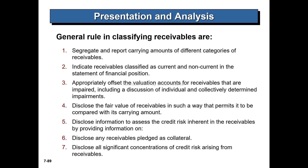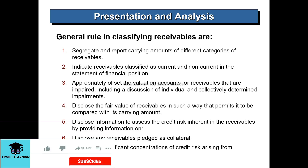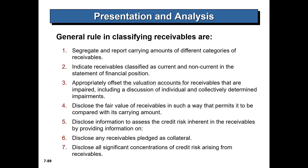General disclosures for receivables: segregate and report the carrying amount of different categories of receivables. Indicate whether receivables are classified as current or non-current in the statement of financial position. Include appropriate offset of valuation accounts for impaired receivables, including discussions of individual or collective determined impairments.